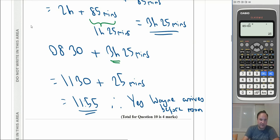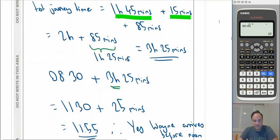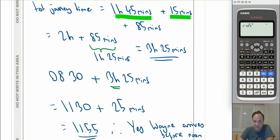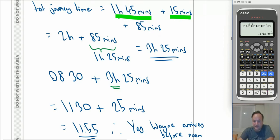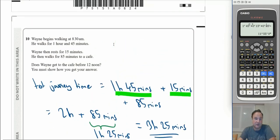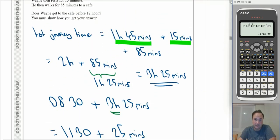We can also verify this using the calculator's DMS (degrees-minutes-seconds) button to add times directly: 1h 45min + 0h 15min + 0h 85min + 08h 30min. The calculator automatically converts everything and confirms the arrival time is before noon.